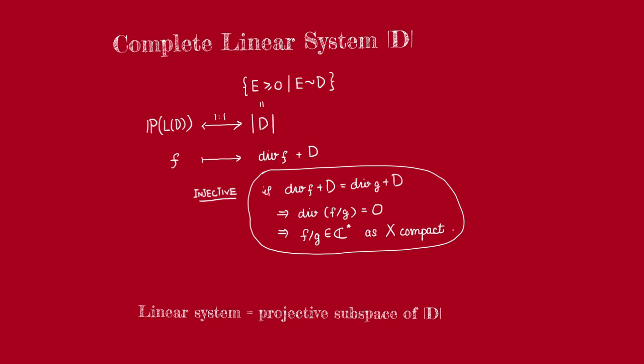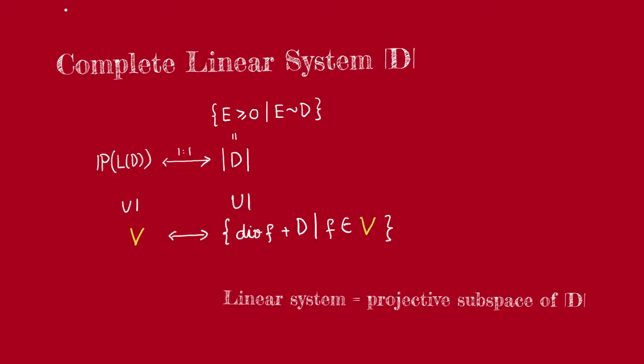This gives us a projective space structure on the complete linear system of D. Any linear system is just a projective subspace of this. So every linear system must come from some projective subspace of the projectivization of L(D), which in turn must come from some vector subspace of L(D). So every linear system must be of the form div(f) + D for f coming from some vector subspace of L(D).